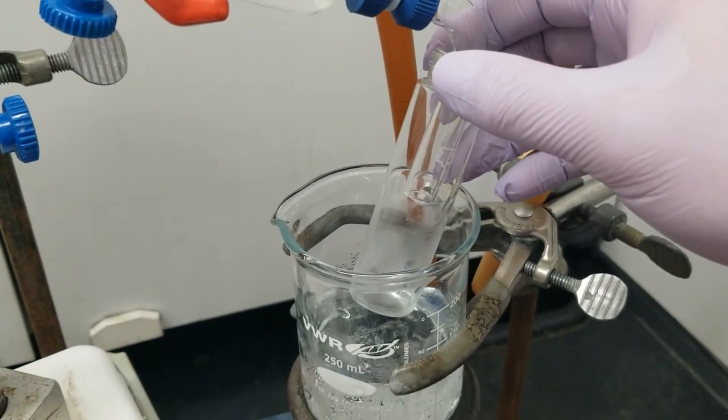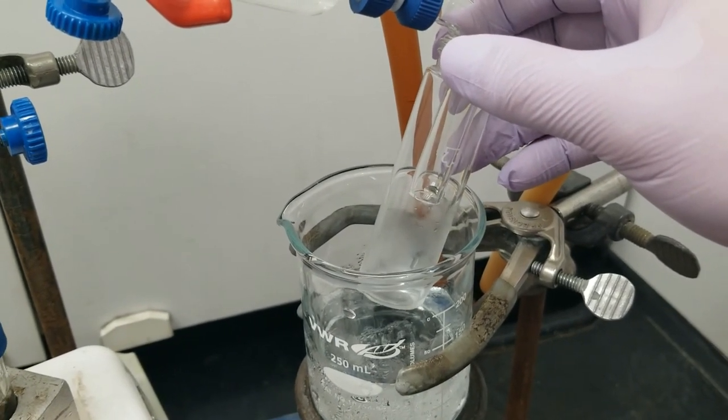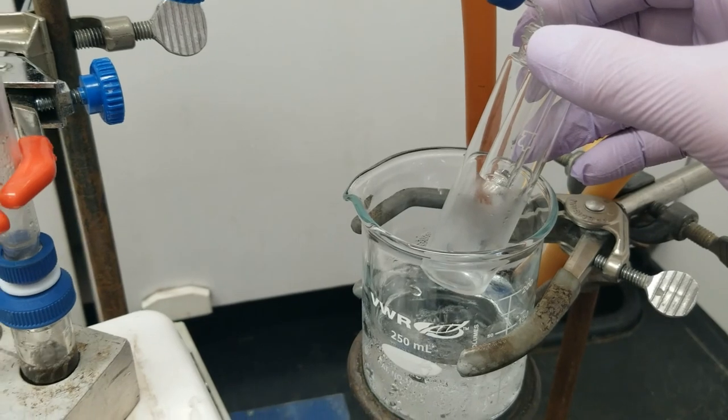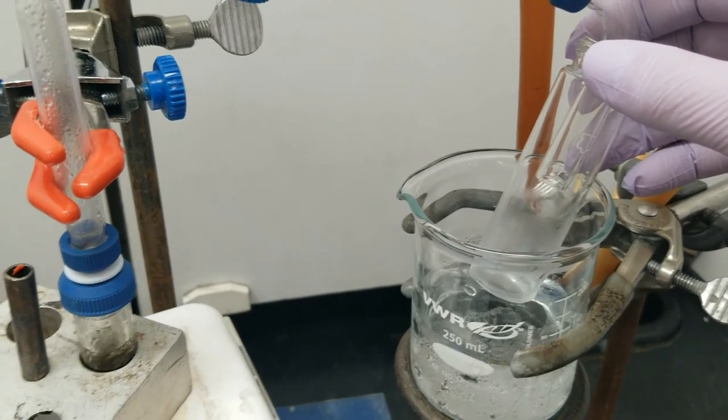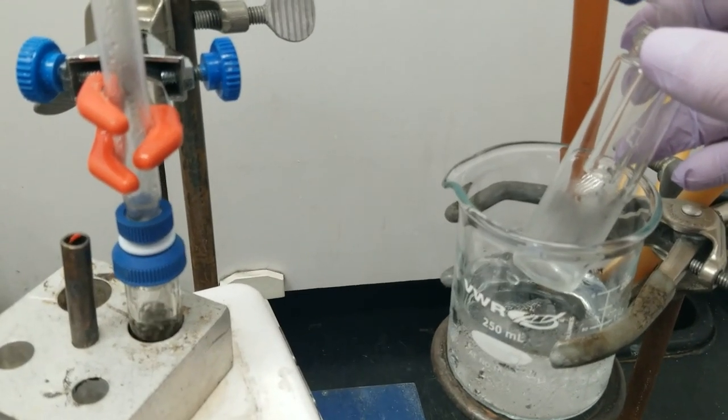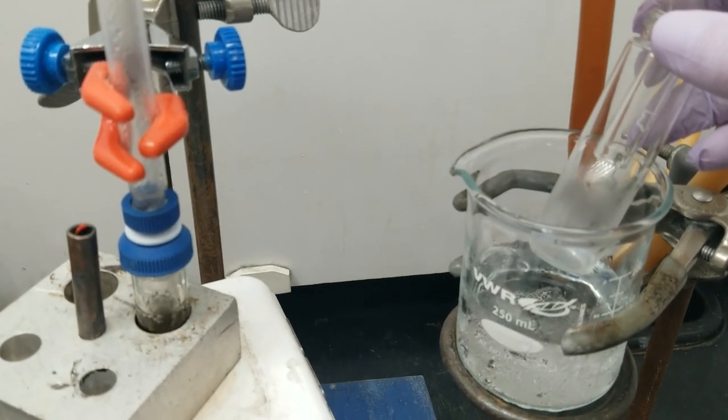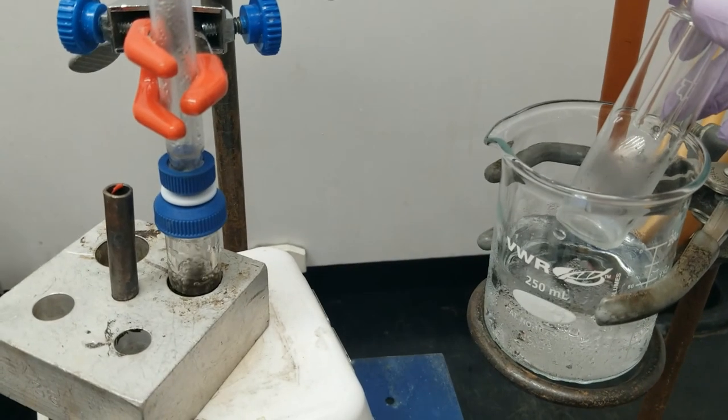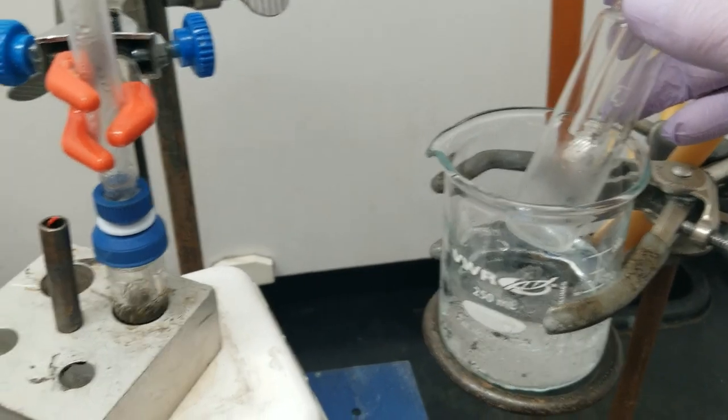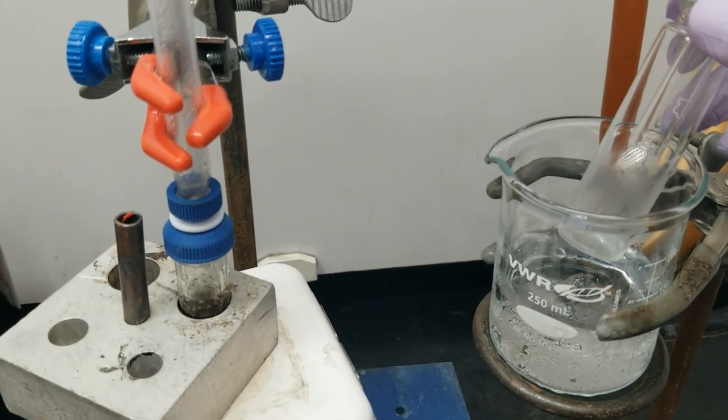And the way that we are going to characterize our product today is by IR. And we have some obvious differences between the cyclohexanol and the cyclohexene that we can look for in the IR. I'm also going to get a mass of this cyclohexene so that we can calculate yield.